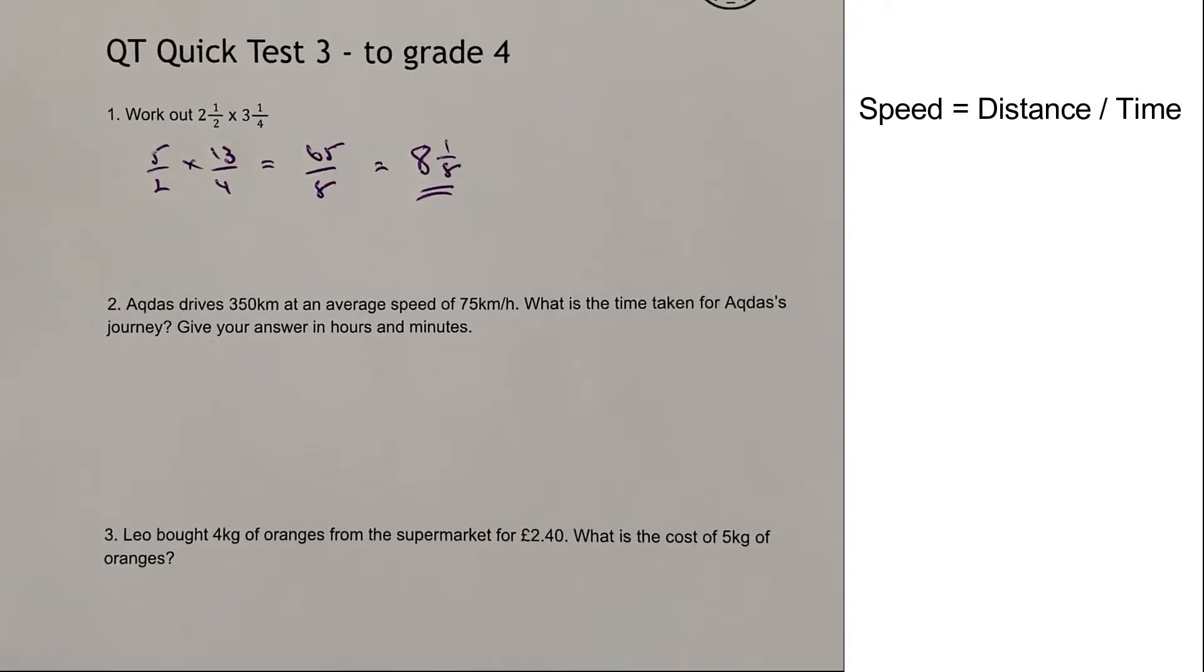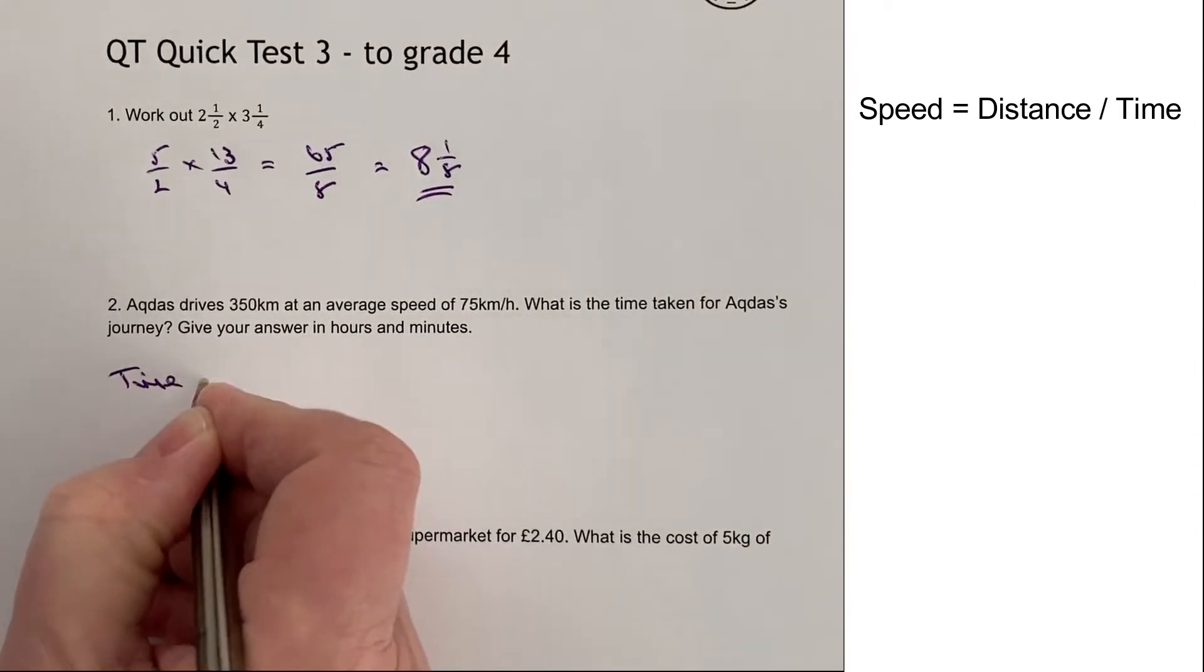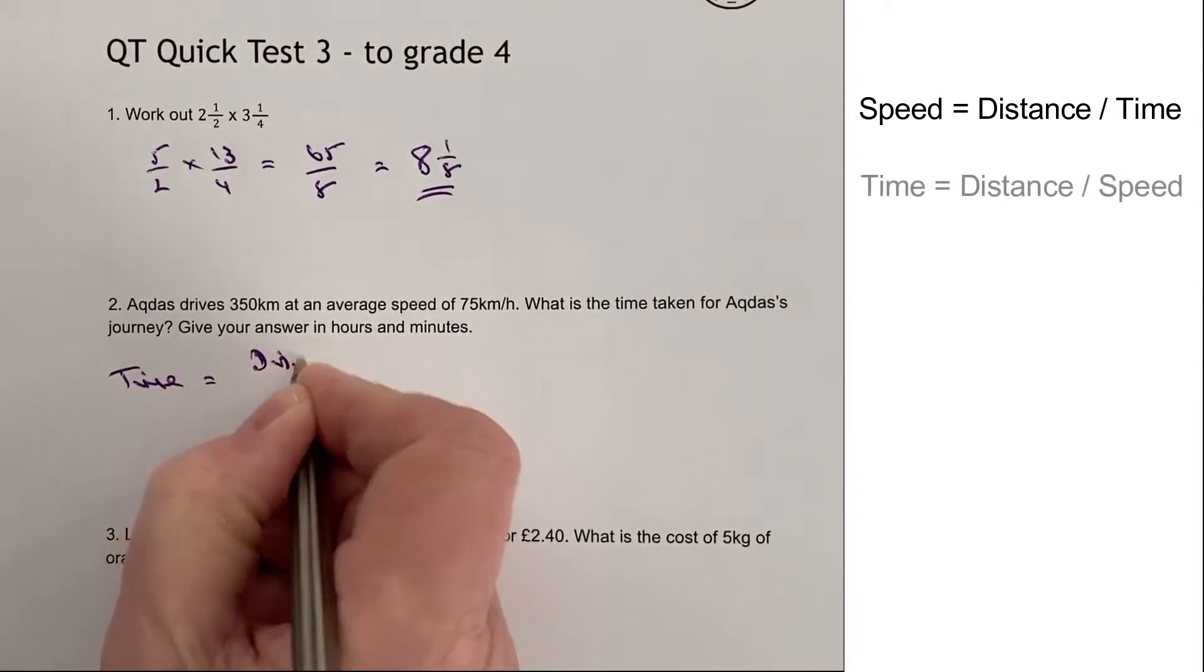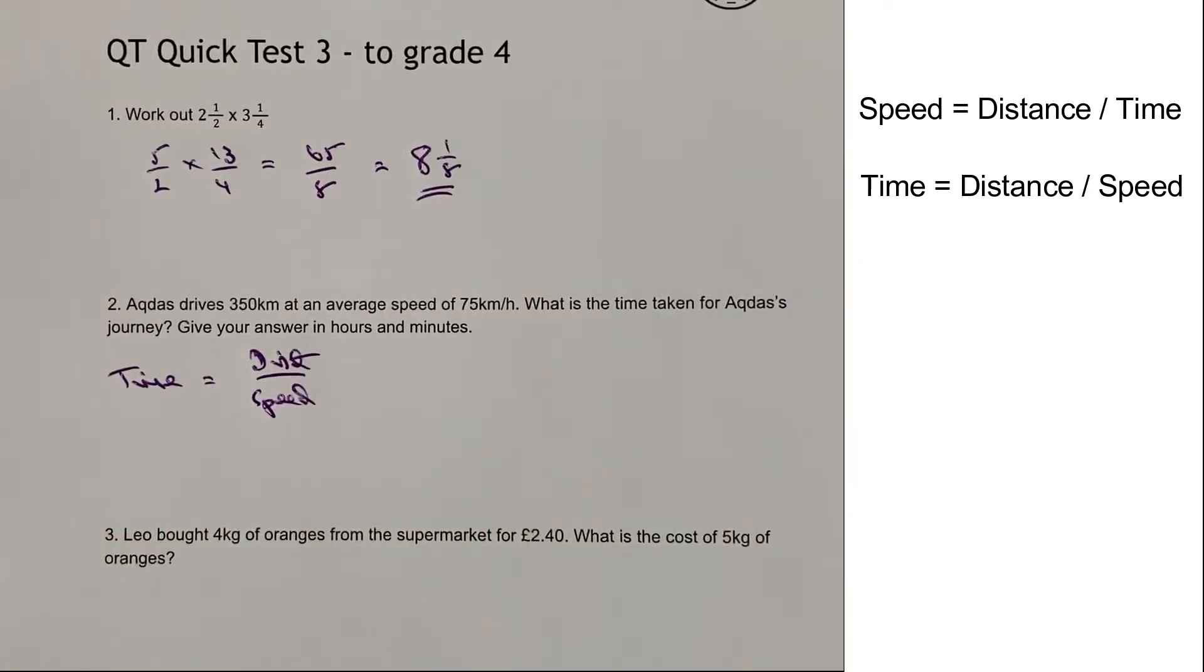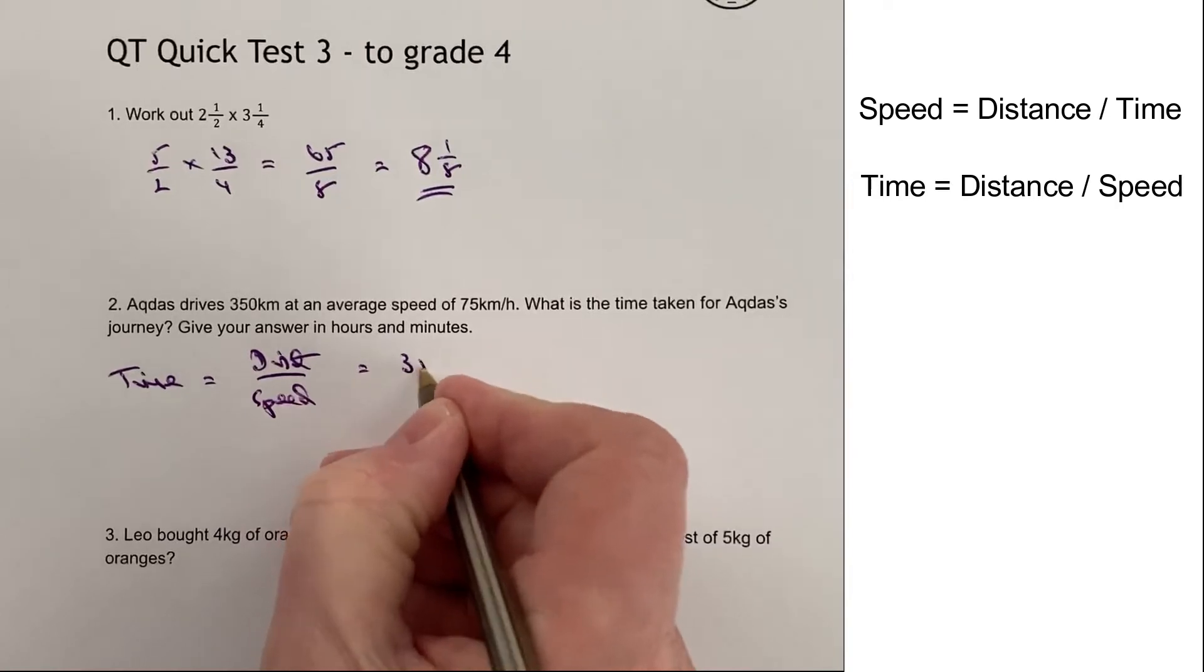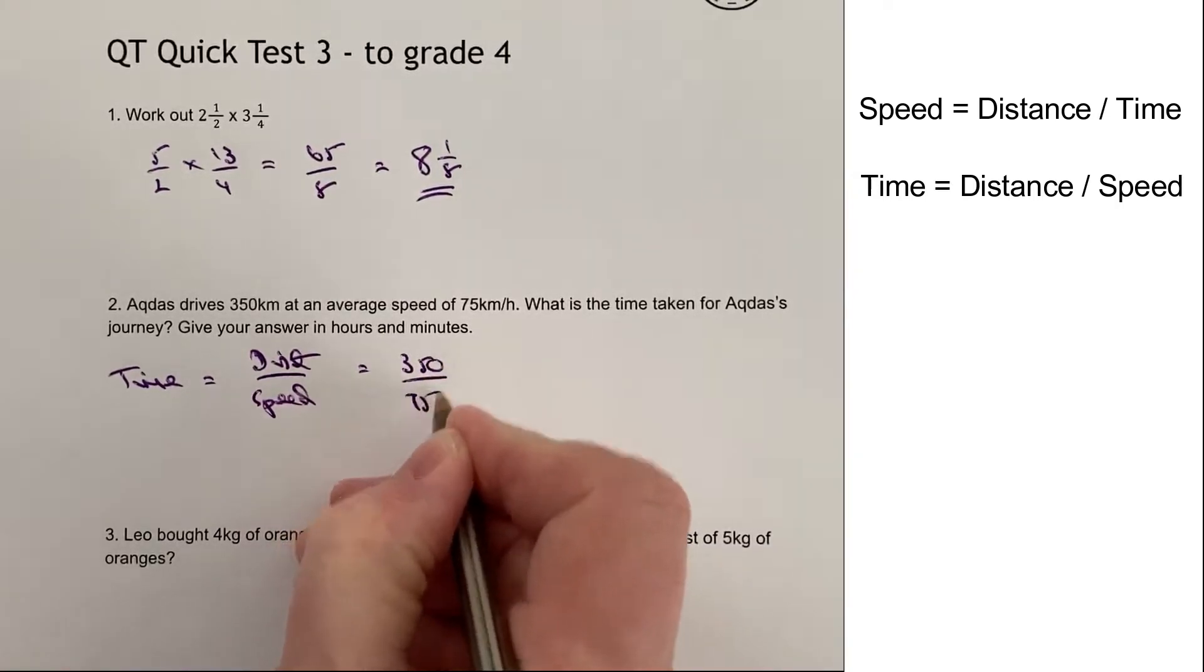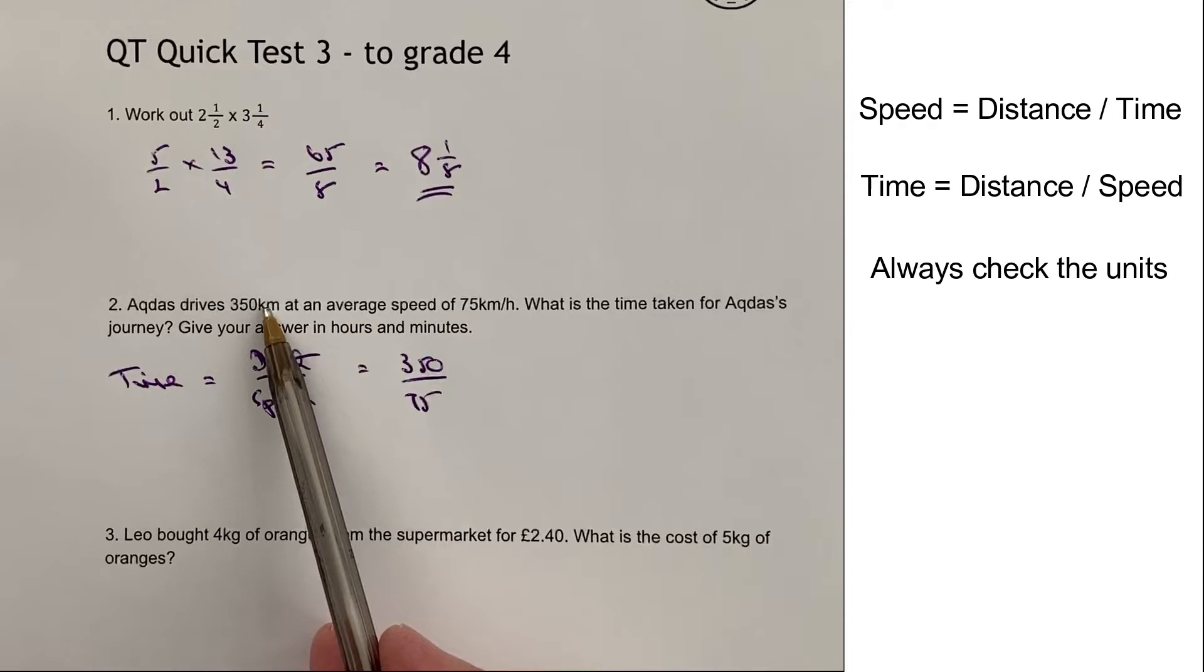So it's a speed, distance and time type question. And really, the easiest way to do this is to know the formula that time equals distance divided by speed. I normally remember it as speed equals distance over time, and then I kind of go from there. So in this particular case, we've got Akdasi drives 350 kilometres, and it's at a speed of 75. And the important thing is kilometres and kilometres, 75 kilometres per hour. So just be very careful with your units.